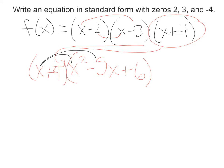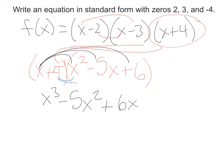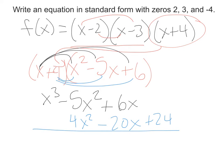I distribute the x to each part: x cubed minus 5x squared plus 6x. Then I distribute the 4 to each part. I like to organize my work by aligning like terms — so 4x squared below the x squared term, 4 times negative 5 gives me negative 20x, and 4 times 6 gives me positive 24. Now I add them all together.